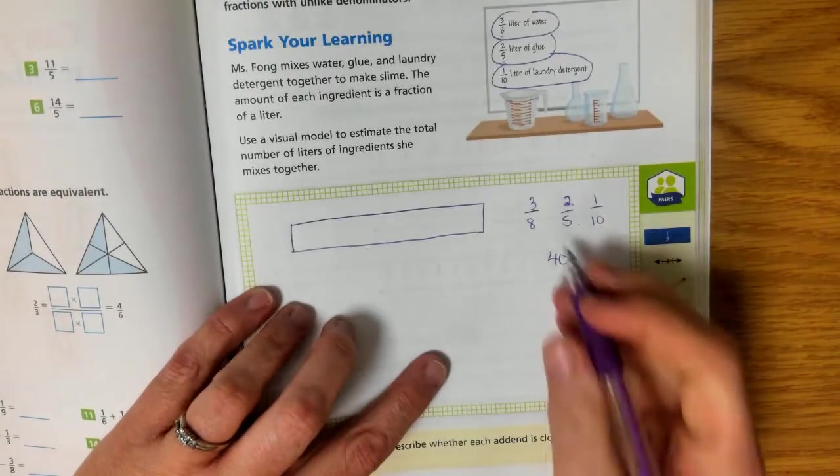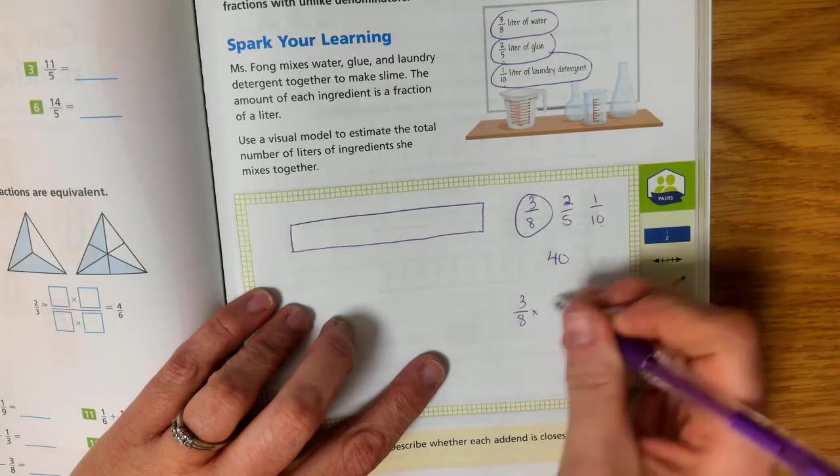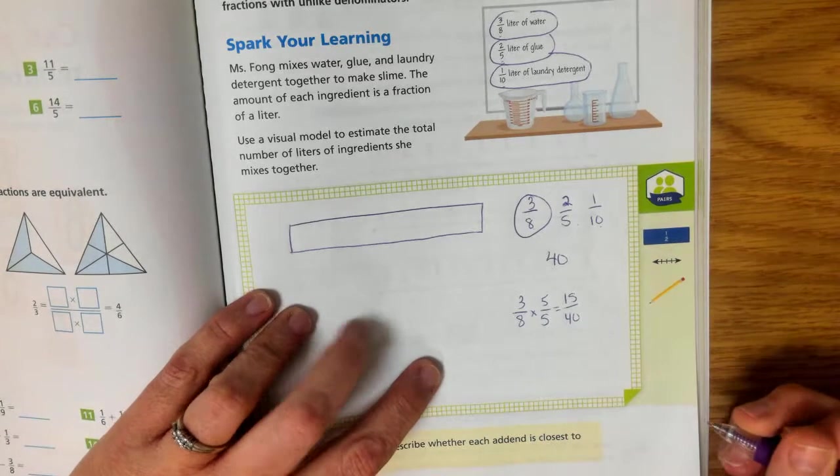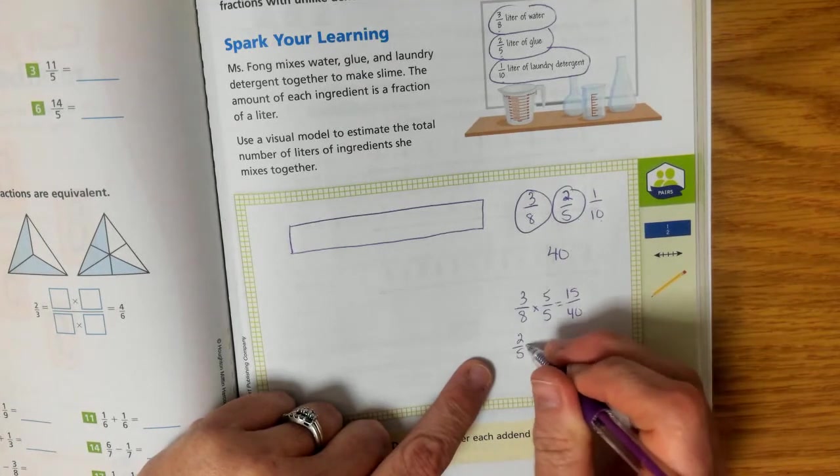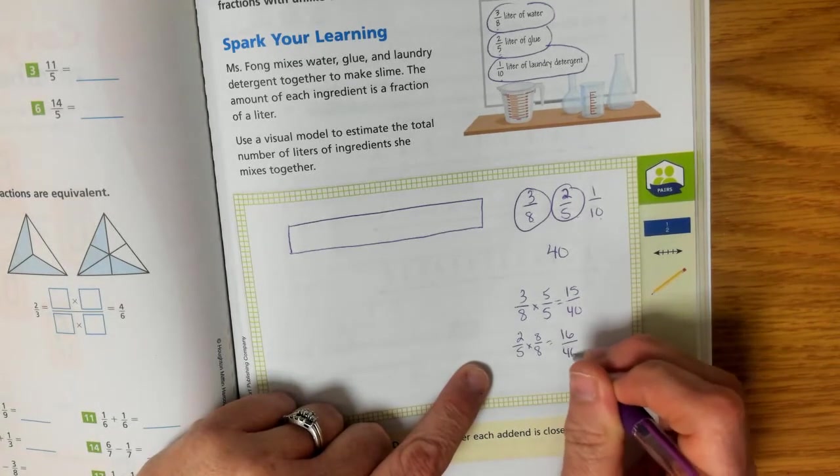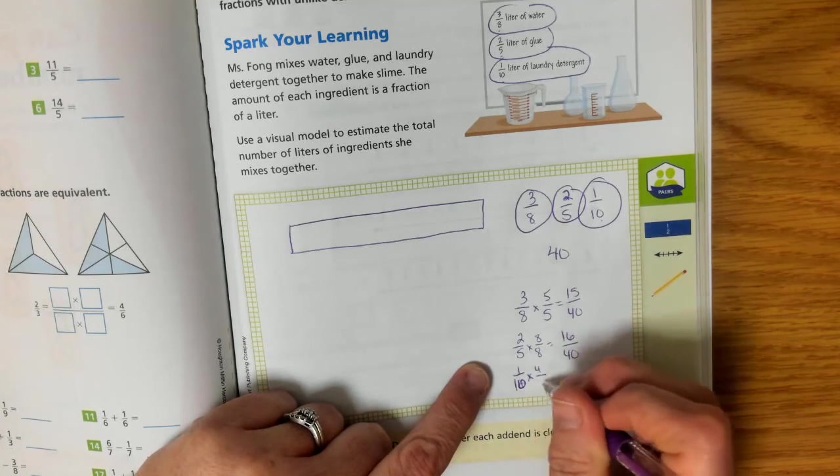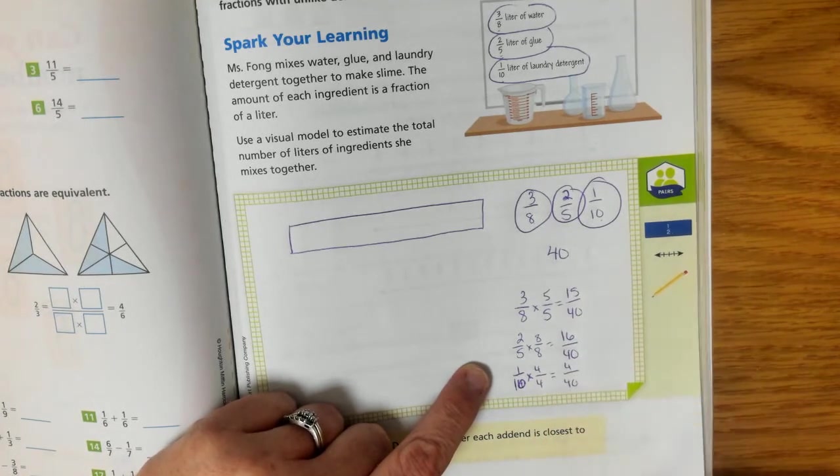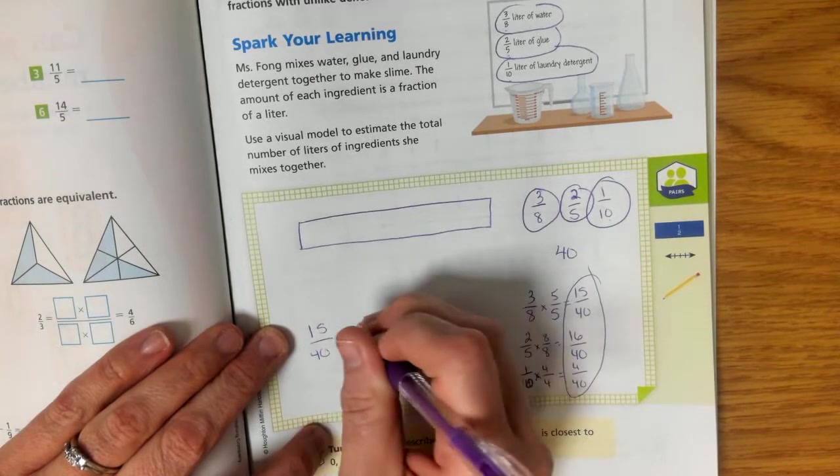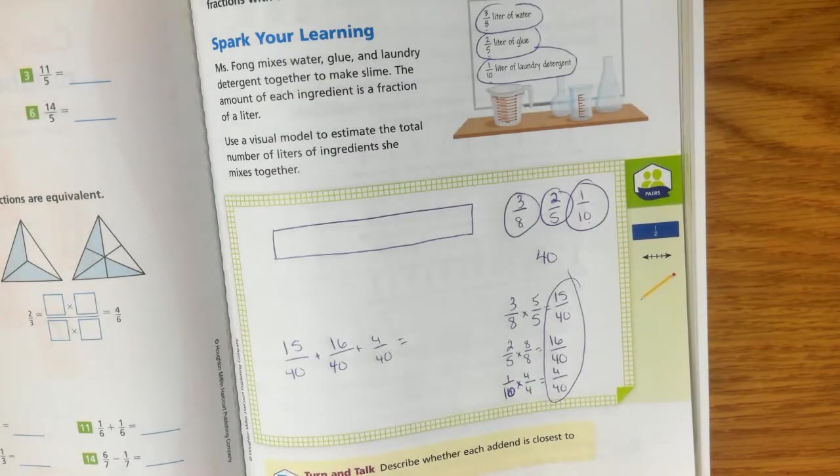So they all can have a 40 in common. So in order to get 40 for my denominator for my 3 eighths, I'm going to have to multiply the top and the bottom by 5. So then I get 15 fortieths, my 2 fifths. I'm going to have to multiply my top number, my numerator, and my denominator by 8. So then I will have 16 fortieths, and then my 1 tenths, I'm going to multiply my numerator and my denominator by 4. So I get 4 fortieths. So now I have numbers that I can add together. So 15 fortieths plus 16 fortieths plus 4 fortieths. Now that they have a common denominator, I can add them together.